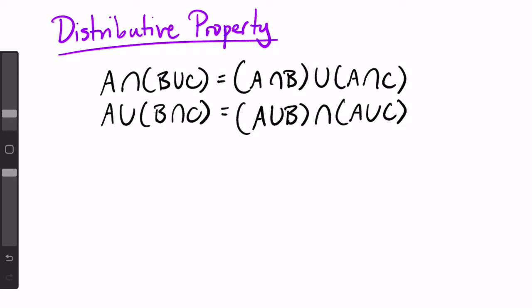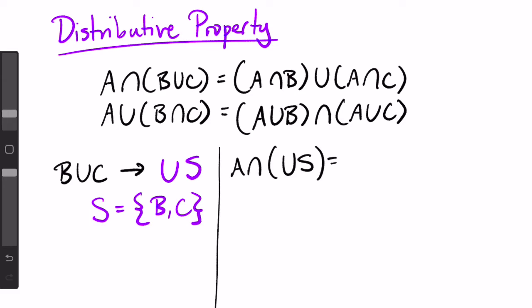We can generalize this property from B union C to union S. In the example above, S would be equal to the set of B and C, but it could contain any number of sets that we want to distribute A onto. So the property above would become: A intersect (union S) is equal to union of the set of all A intersect B such that B is in S, remembering that the line means such that.